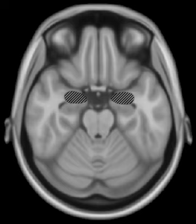Emotions induced by music activate similar frontal brain regions compared to emotions elicited by other stimuli. Schmidt and Trainor discovered that valence — positive versus negative — of musical segments was distinguished by patterns of frontal EEG activity. Joyful and happy musical segments were associated with increases in left frontal EEG activity, whereas fearful and sad musical segments were associated with increases in right frontal EEG activity. Additionally, the intensity of emotions was differentiated by the pattern of overall frontal EEG activity, which increased as affective musical stimuli became more intense.